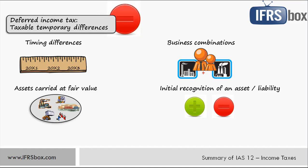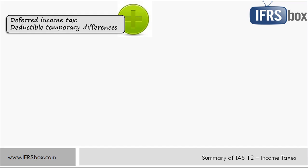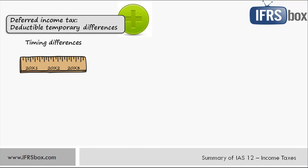No matter where the taxable temporary difference arose, an entity shall recognize a deferred tax liability for all of them except three cases: no deferred tax liability is recognized from the initial recognition of goodwill; no deferred tax liability is recognized in a transaction that is not a business combination and affects neither accounting nor taxable profit; and no deferred tax liability on liabilities arising from undistributed profits from investments where the entity is able to control the timing of the reversal and it is probable that the reversal will not occur in the foreseeable future.